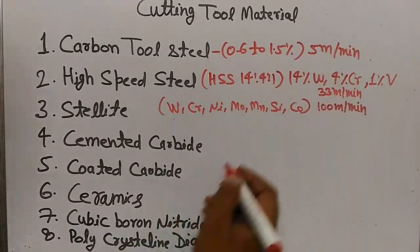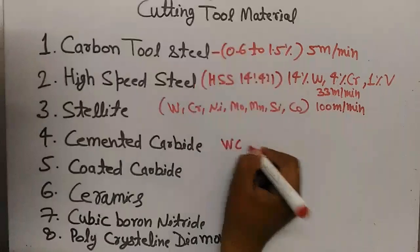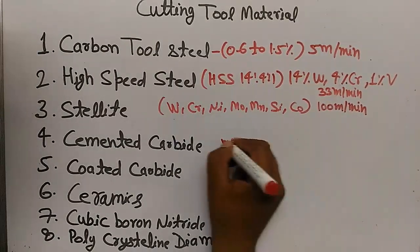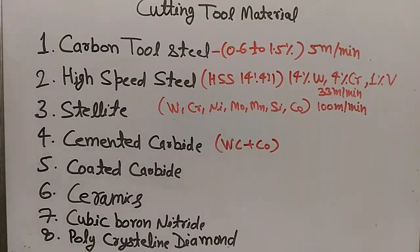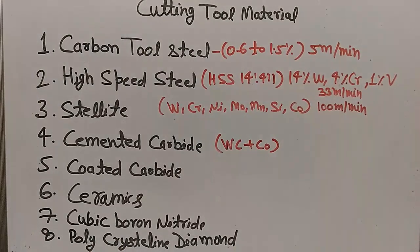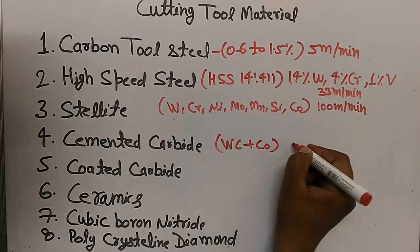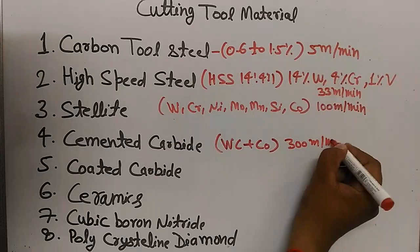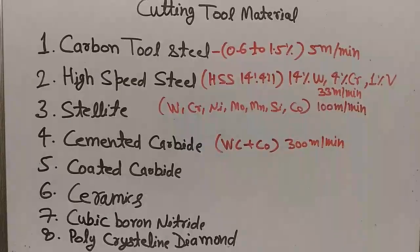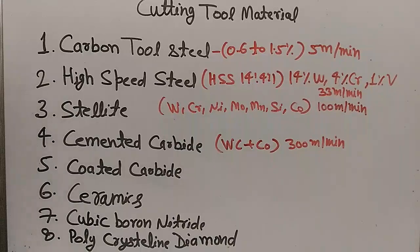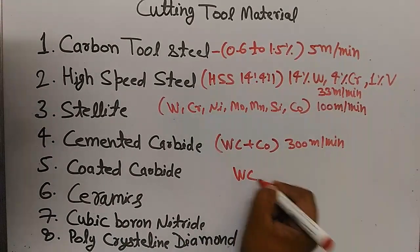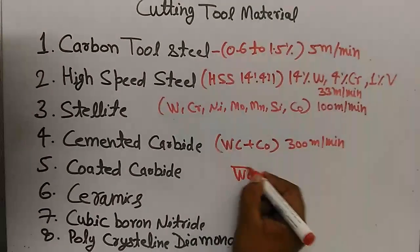Cemented carbide is nothing but a composite of tungsten carbide and cobalt. The maximum cutting speed for cemented carbide is 300 meters per minute. Coated carbide is tungsten carbide coated by three layers.